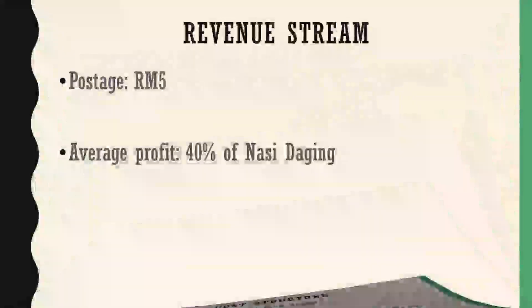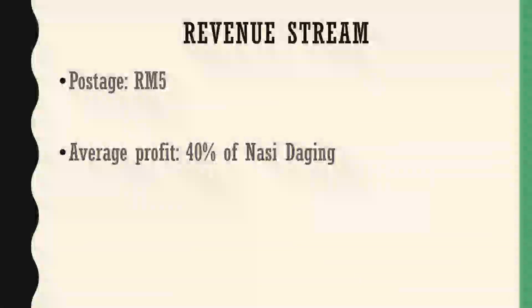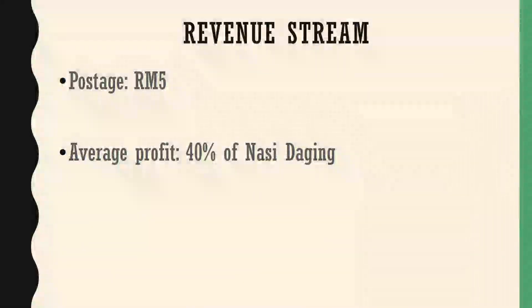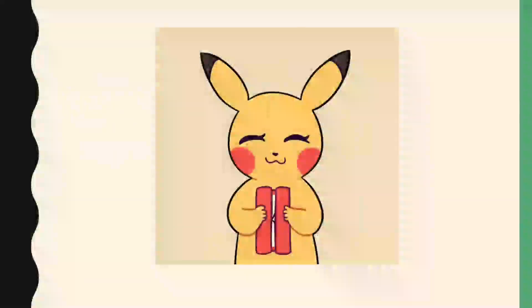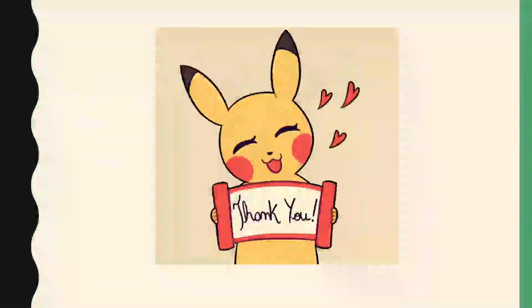For the revenue stream, the postage fee for any area in Kuala Lumpur and Selangor is only RM5. The average profit of nasi daging is 40%. That is all from me — thank you.